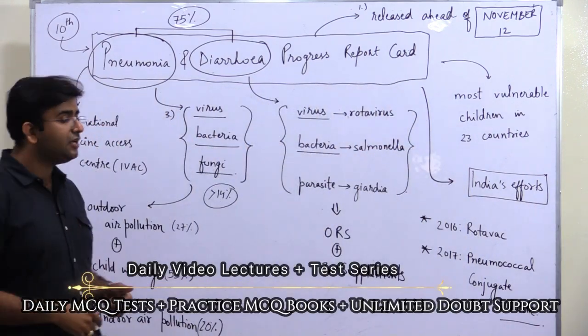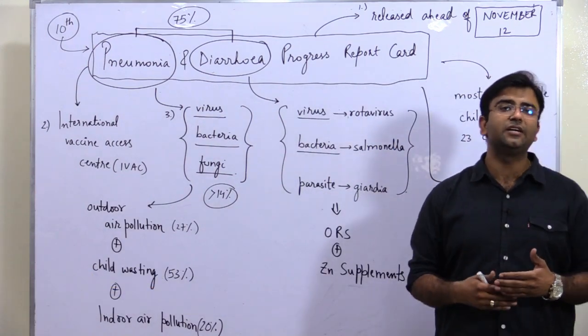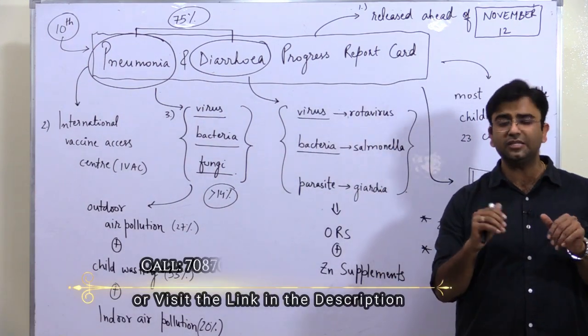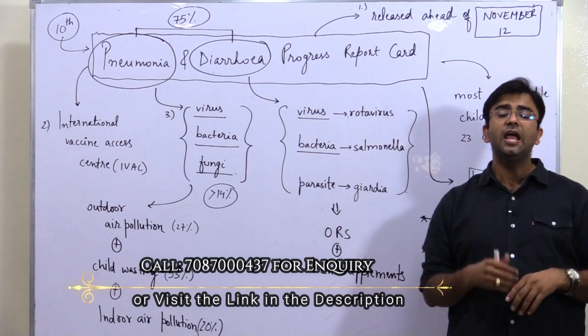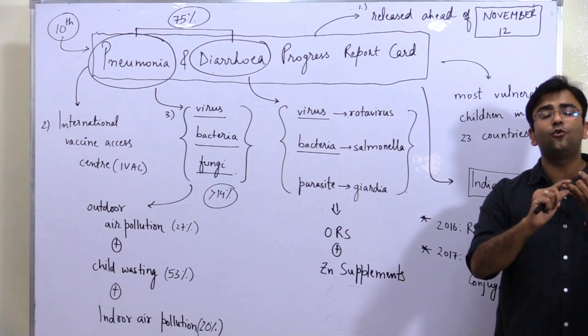To fight pneumonia and diarrhea, this report provides a list of indicators. It consists of access to healthcare, ORS, zinc supplements, breastfeeding, vaccination, and access to antibiotics.